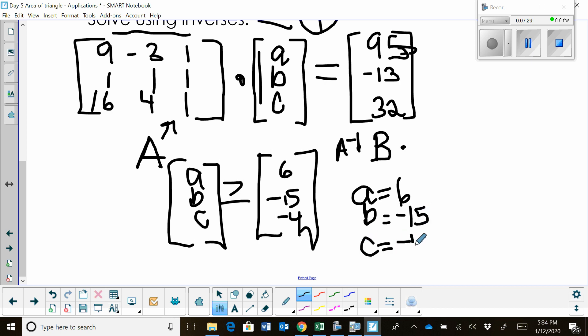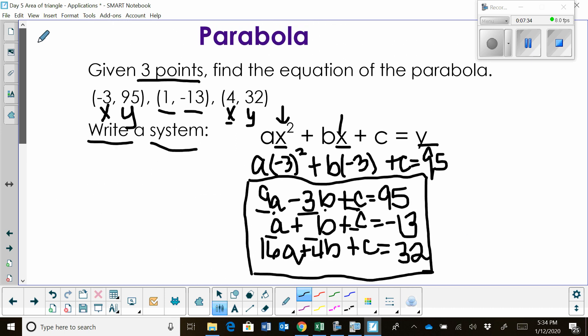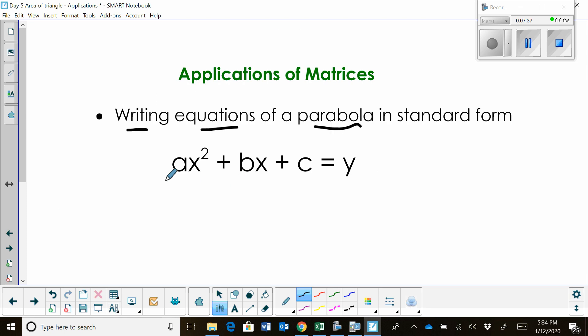Now, I'm really not finished. I have found my variables. But remember, we're trying to write the equation of a parabola in standard form. So I'm going to go back to my standard form and plug in a. a was 6, so 6x². b was -15, so plug in a -15x. c is -4 and is equal to y. Now we have it. This is the equation of a parabola in standard form using matrices.